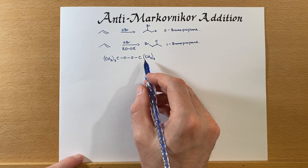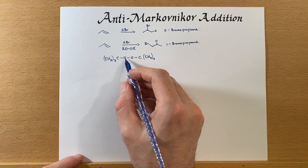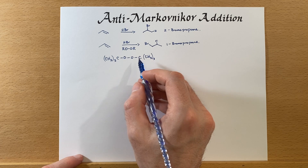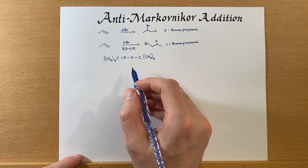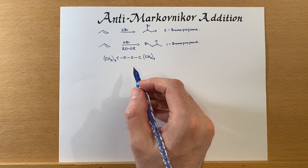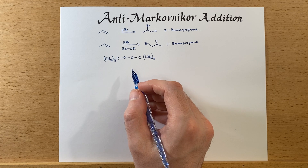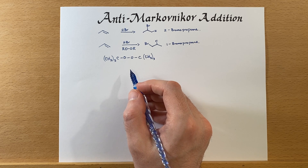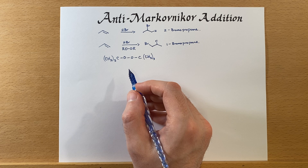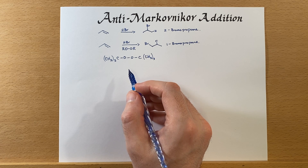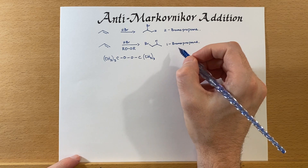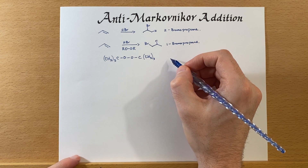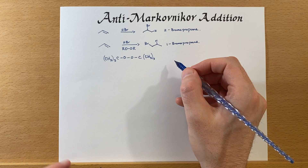One possibility for the peroxide is this structure shown here, and there are others we could use to make this process happen. It's also possible to see anti-Markovnikov addition when you weren't expecting it, and that's simply because solvents can sometimes have peroxide contamination — this is especially a possibility in ethers.